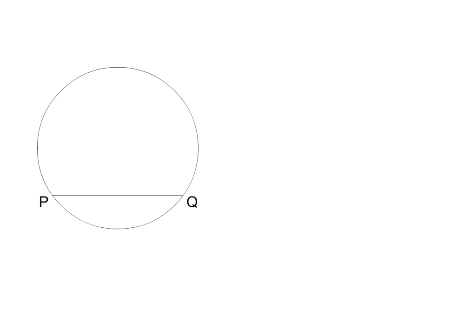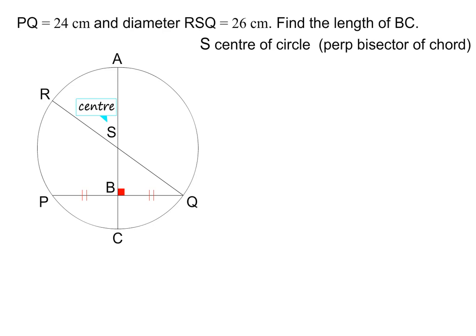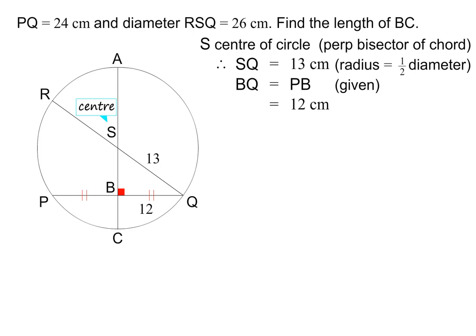Let's do one more question together. PQ is a chord with length 24 cm. ABC is the perpendicular bisector of chord PQ, and RSQ is the diameter of the circle with length 26 cm. Find the length of BC. Using Theorem 2, we can conclude that S must be the center of the circle. This means that SQ is a radius and is equal to 13 cm — in other words, half the diameter. BQ is equal to 12 cm, which is half of PQ. We can now use Pythagoras in triangle SBQ to find the length of SB.